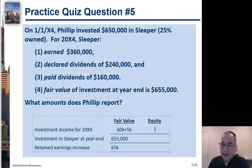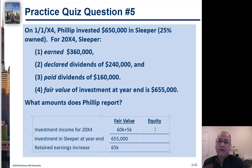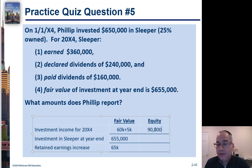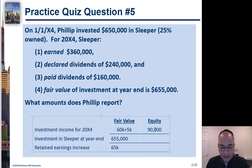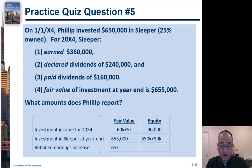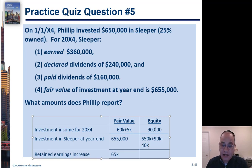Under the equity method, investment income would be based on your share of income of the investee — it's not really a subsidiary because you own less than 50%. Sleeper earned $360,000, so one quarter of that — $360,000 divided by 4 — is $90,000. That would be your investment income. Your investment in Sleeper at year end would be $650,000 plus $90,000 your share of income, minus your share of the dividends, which would be $160,000 times 25%, or $40,000. And your retained earnings increase would be $90,000.